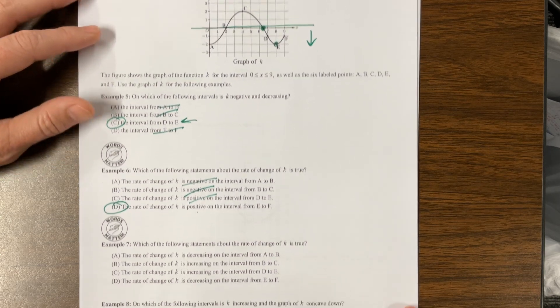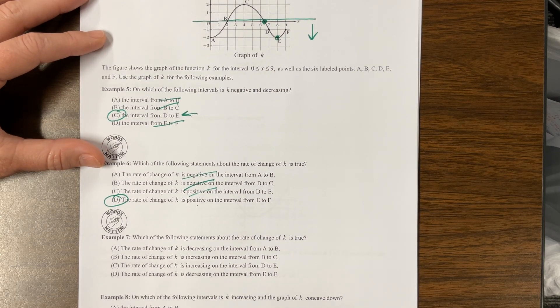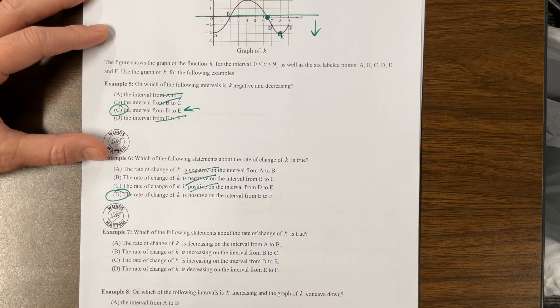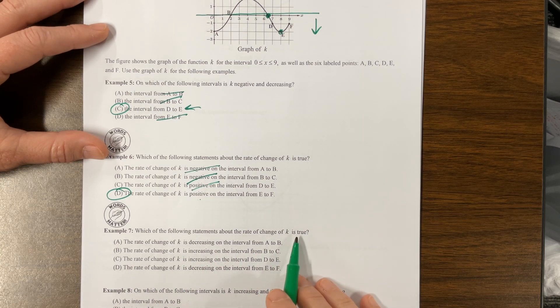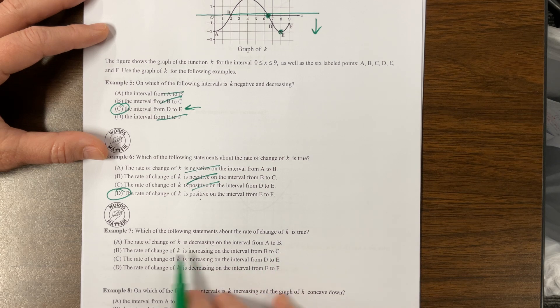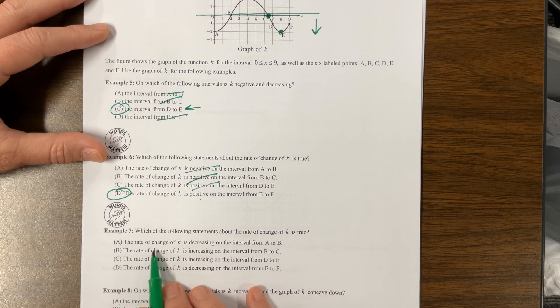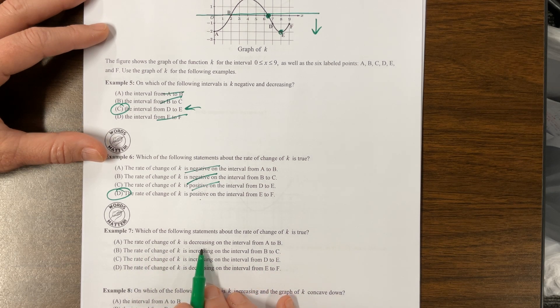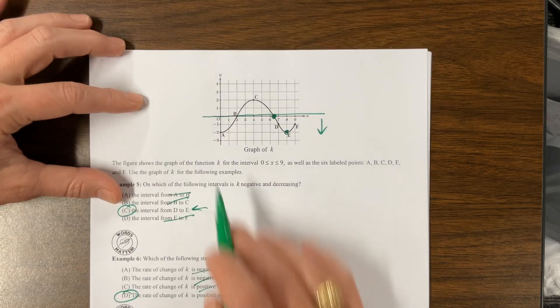Which of the following statements about K is true? The rate of change is decreasing on the interval from A to B. So the rate of change is decreasing means it's concave down. A to B is concave up. So no. Rate of change is increasing from B to C. That means increasing means concave up. B to C is concave down. So no.